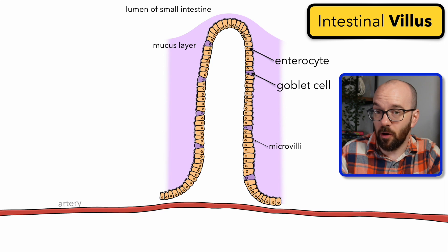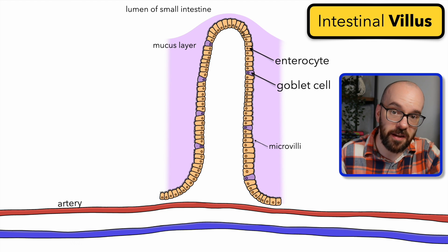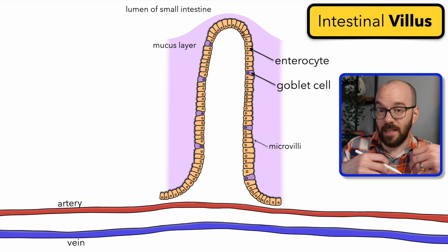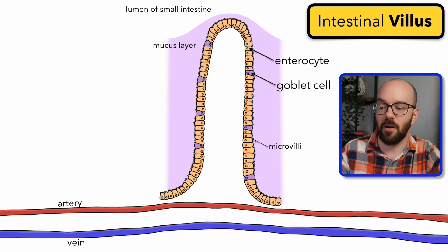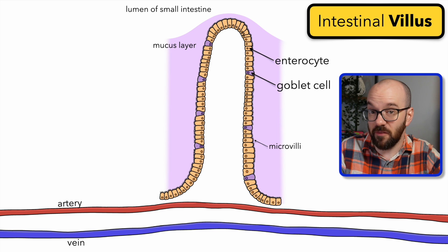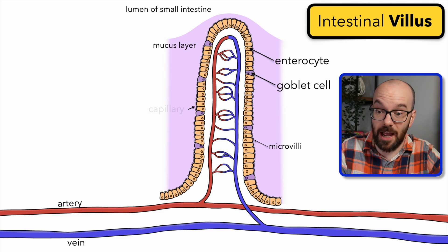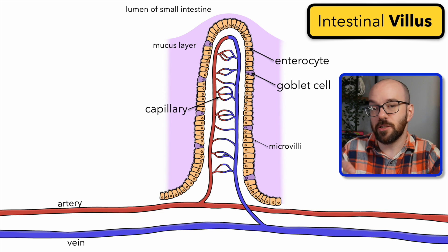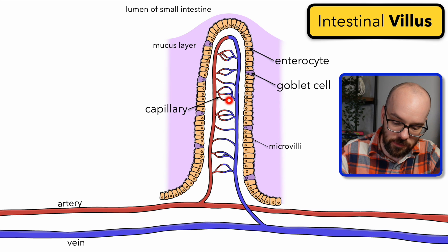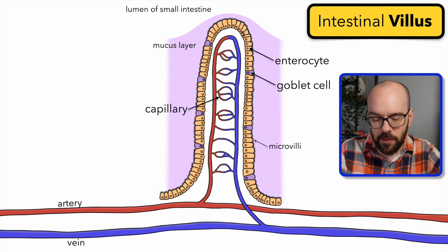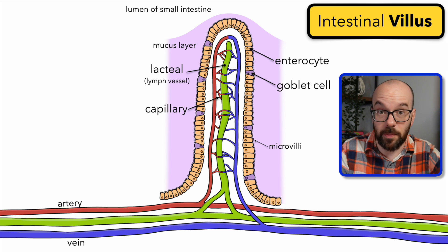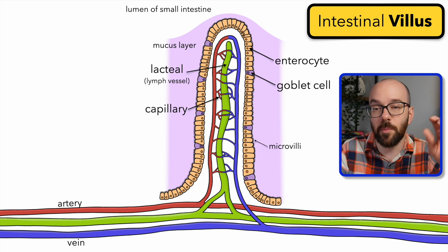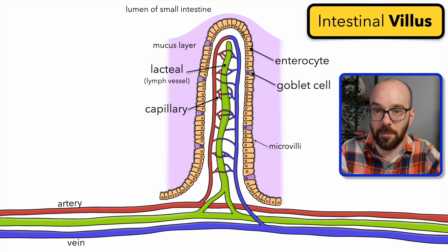Running through the villus we're going to have arteries and veins, because we're absorbing things into the bloodstream. But diffusion actually occurs in and out of the capillaries specifically. So each villus has a capillary network that extends up into it. We also have a lacteal, or lymphatic vessel — this is especially important for absorbing lipids or fats we eat in our diet, though it won't be the focus of this particular video.